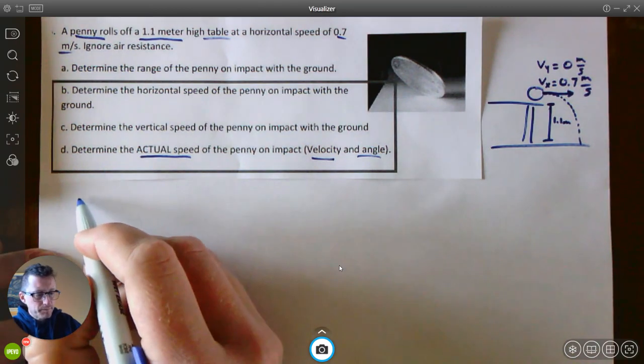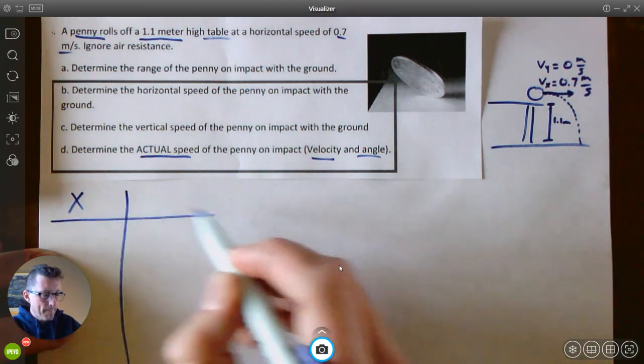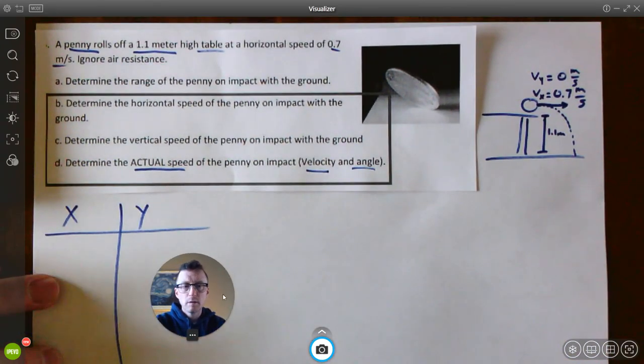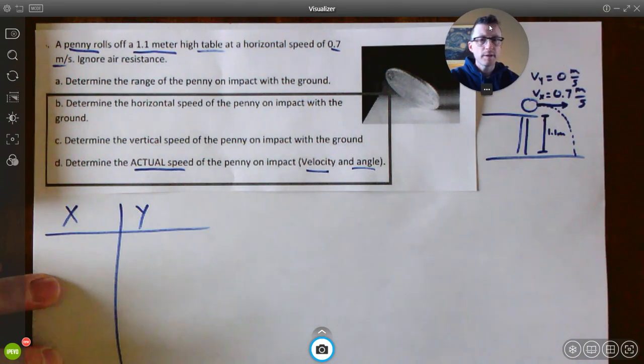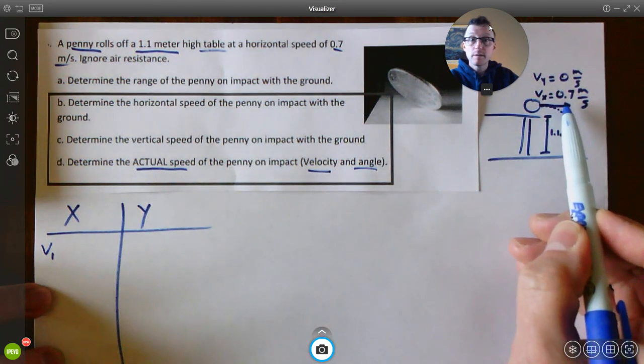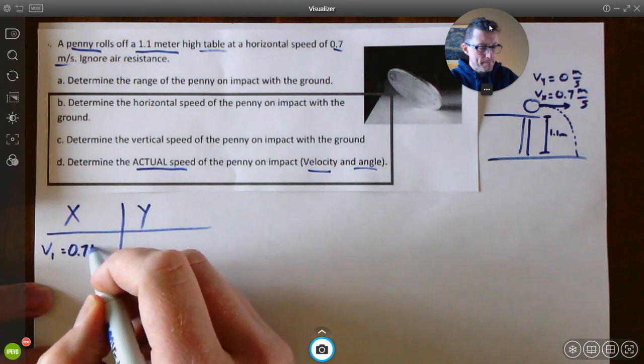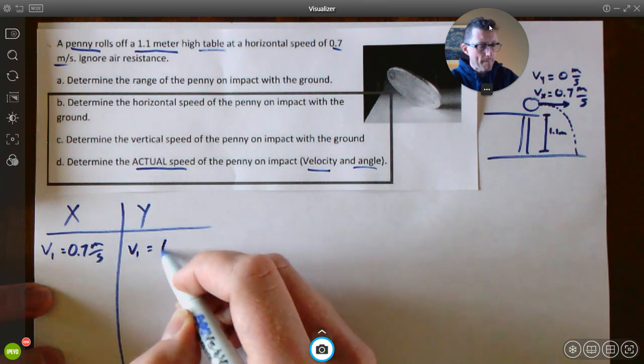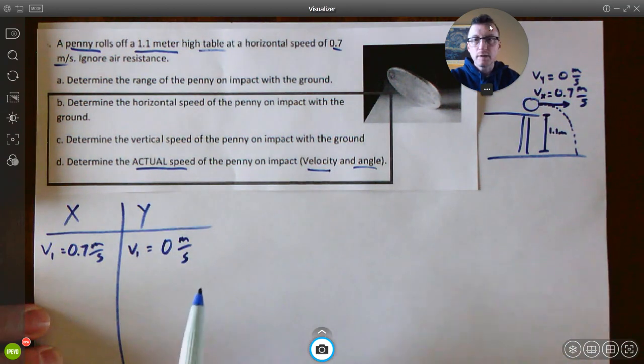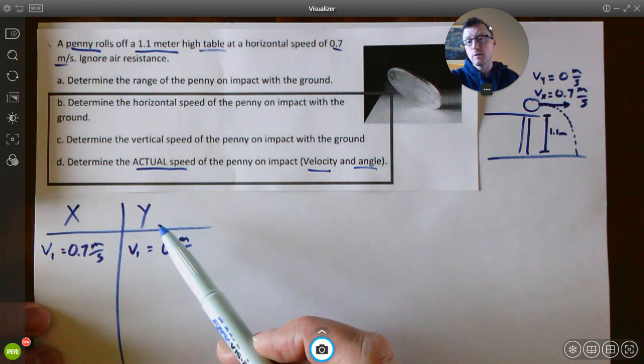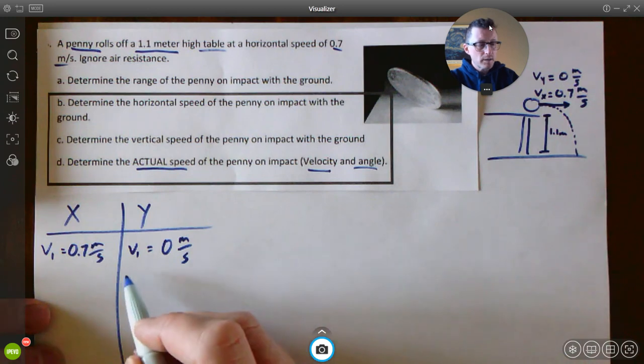So that gives us the starting velocity components at the beginning. So let's create our X and our Y chart. And we know now, I'm going to move my picture over here. Let's move it to where about there it is. We know that our V1 for the X is this one right here, the 0.7. We know our VY is that one right there. Let's list what else we know. We know 1.1 meters. That's how tall the table is. So first thing you got to ask, is that an X number or is that a Y number? Well, that's an up and down. So that's going to be Y. It's going to be our distance.